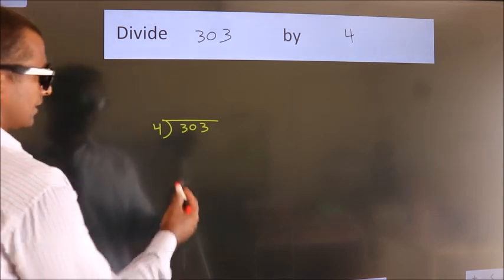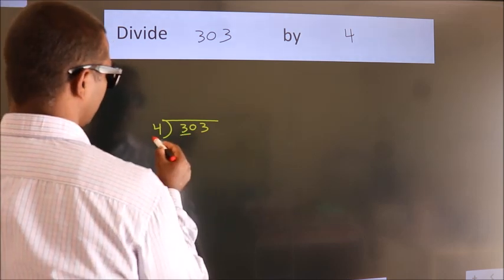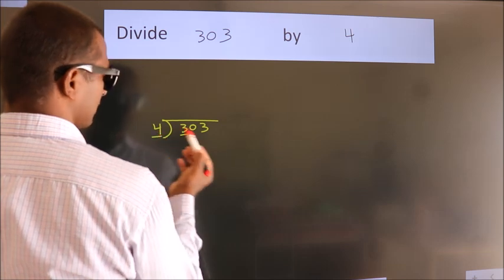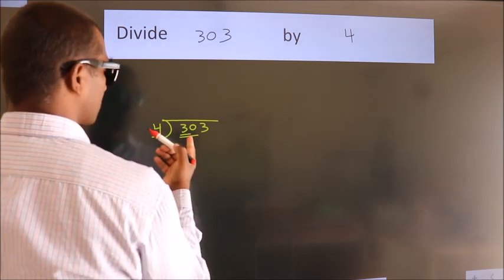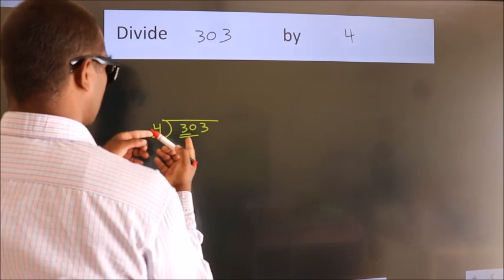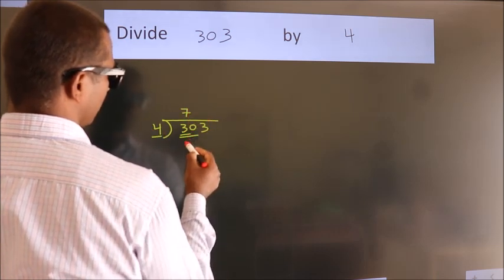Next, here we have 3, here 4. 3 is smaller than 4, so we should take 2 numbers: 30. A number close to 30 in the 4 table is 4 times 7 equals 28.